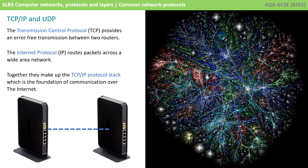The first group of protocols we're going to look at are used over the internet. The first is the Transmission Control Protocol, TCP, and it provides an error free way of transmitting data between two routers. The second is the Internet Protocol, IP, and this is responsible for routing packets across a wide area network. Put them together and you have the TCP/IP protocol stack, and this is the basic foundation of all communication over the internet.